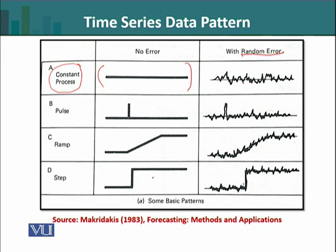The random error will cause fluctuations in the result, but those fluctuations will not form a distinct pattern — they will remain random. The second type is also a constant but is called a pulse. So while the first type shows a simple horizontal line, a pulse is also a constant process with an additional characteristic.